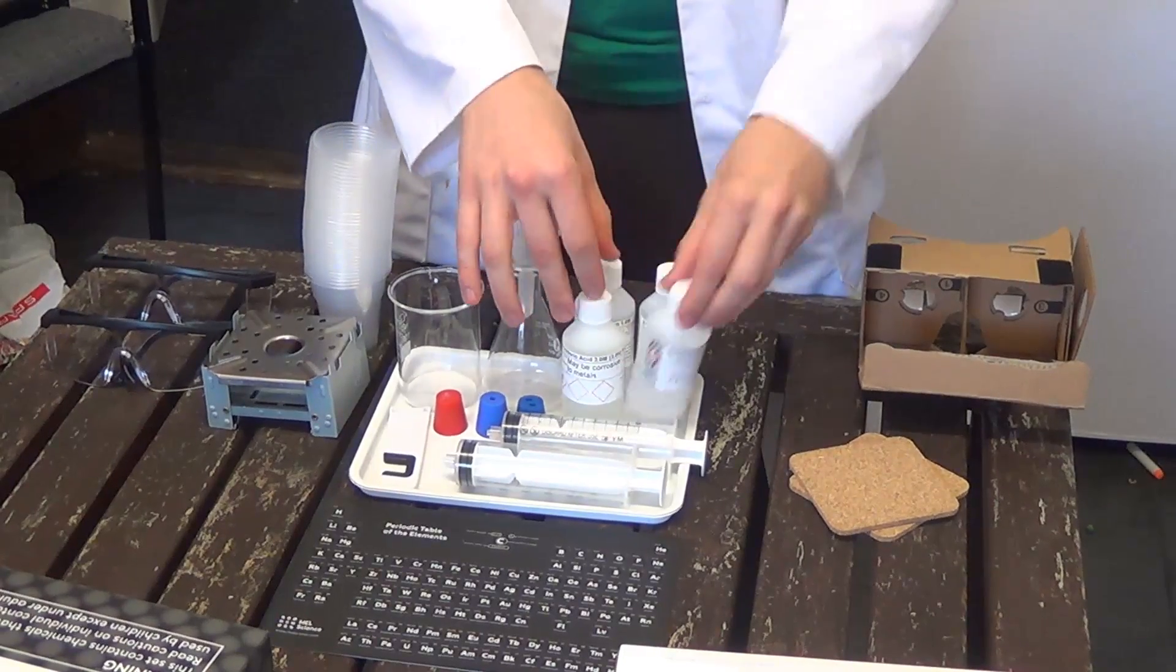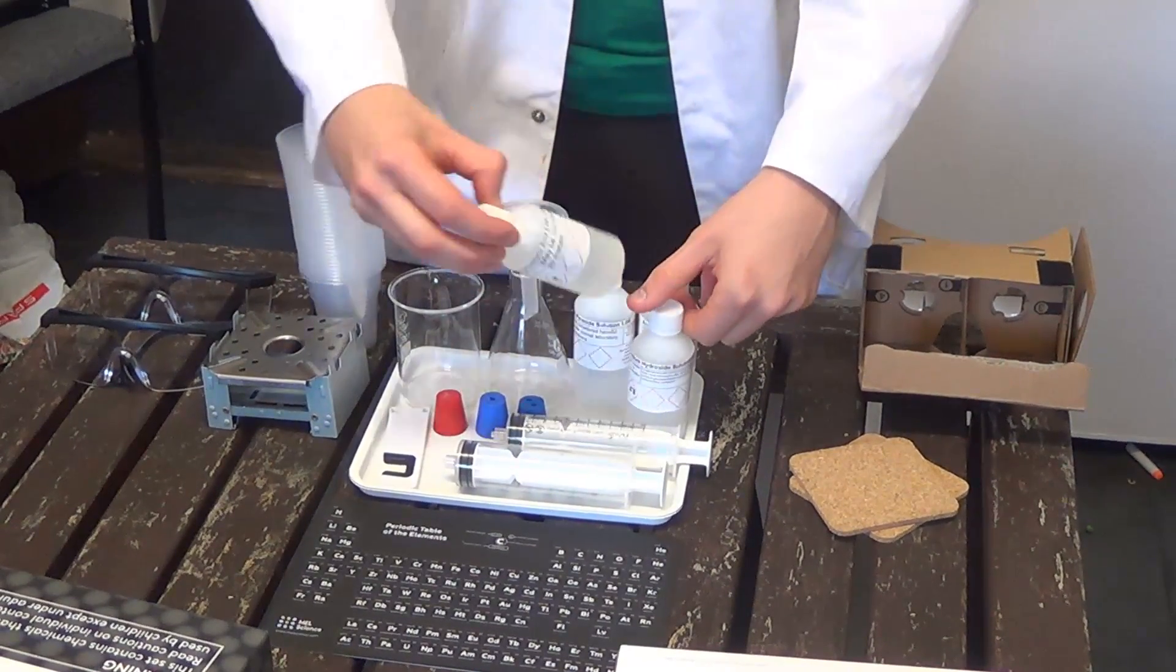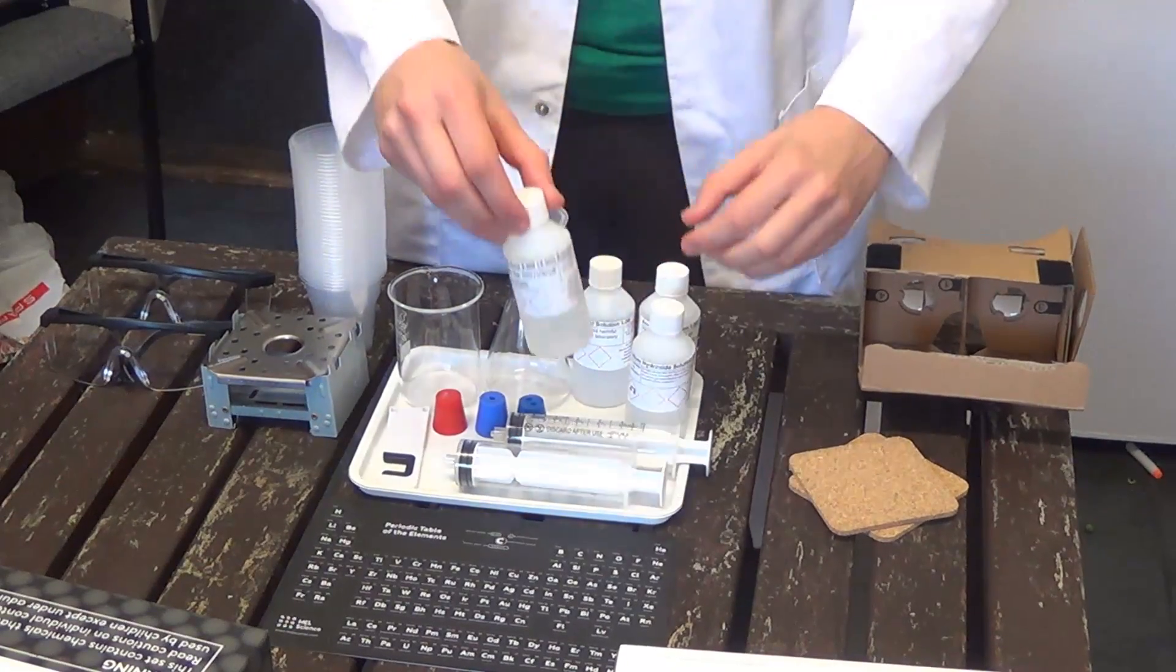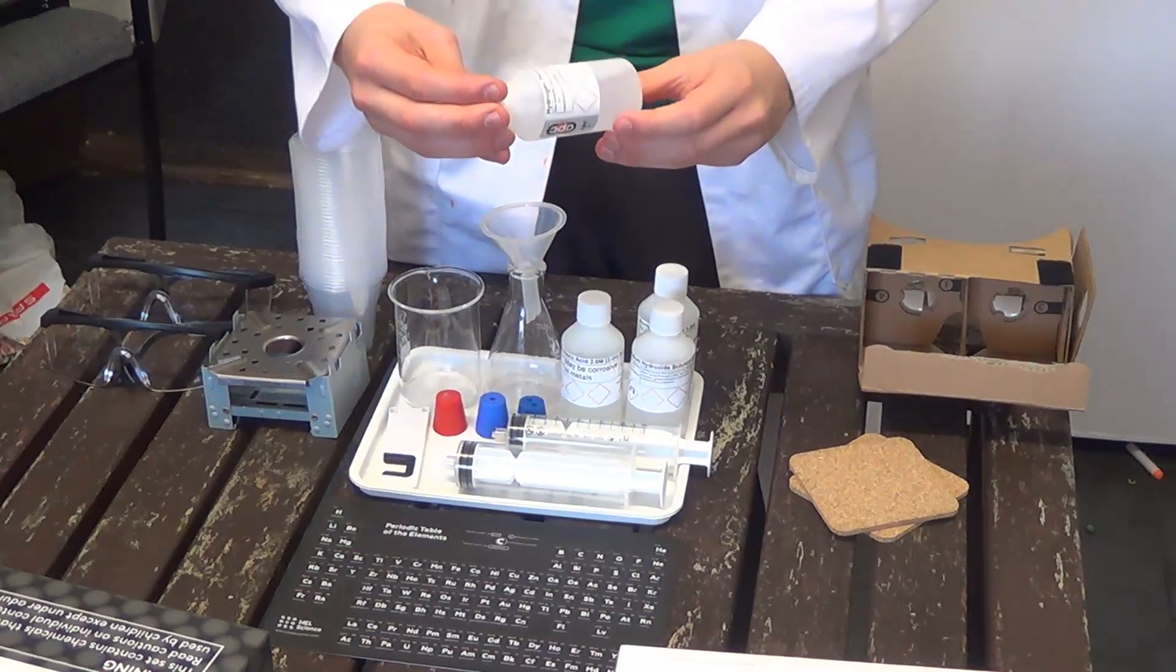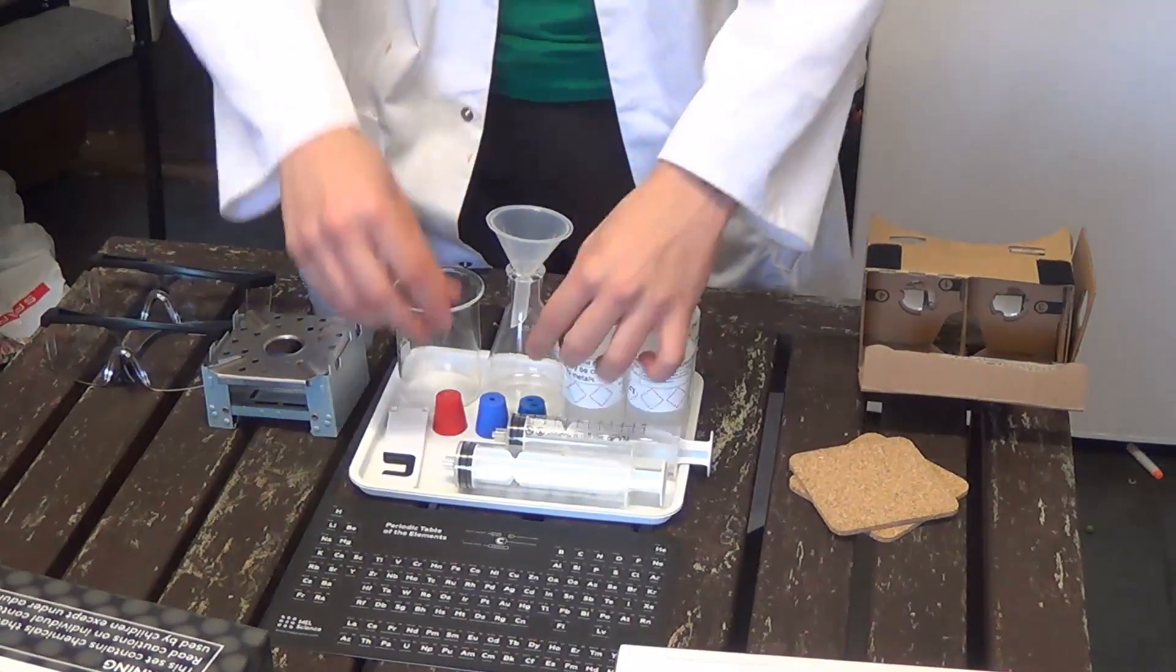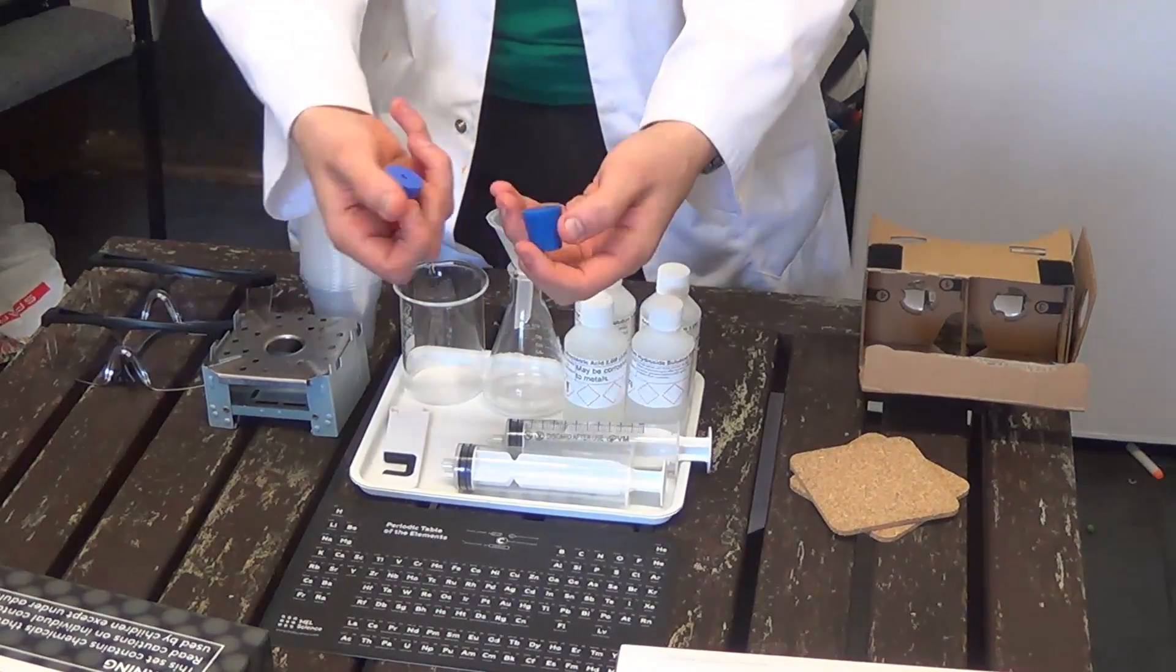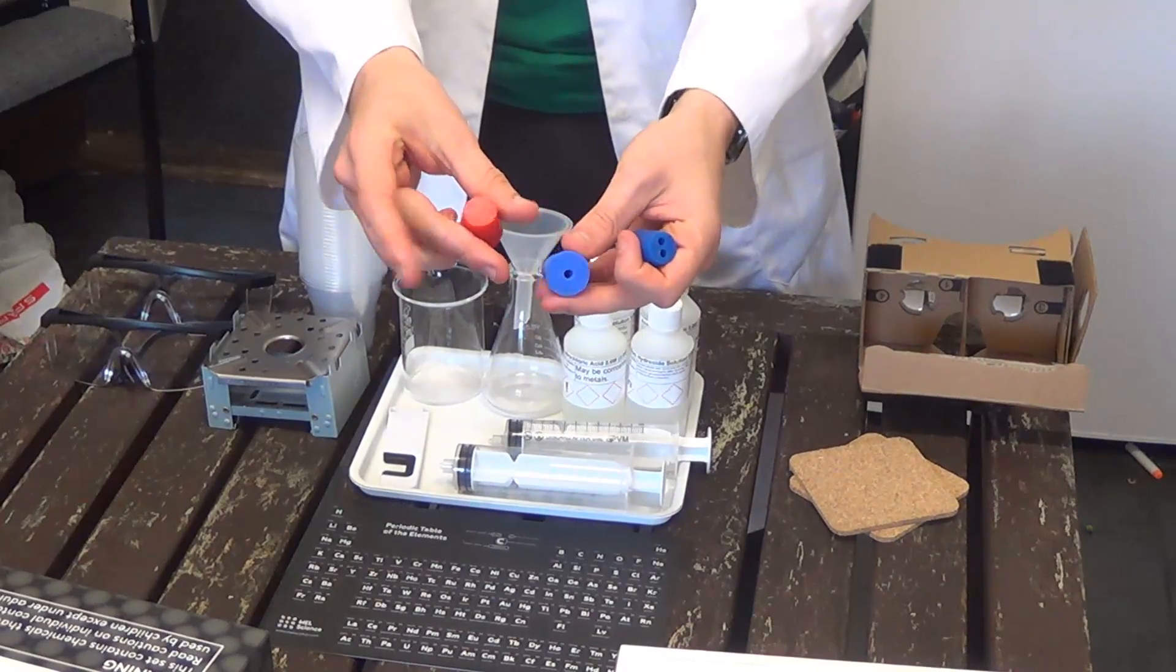Got a bunch of chemicals. This is sodium hydroxide, hydrochloric acid, ammonia, and hydrogen peroxide. We can do some fun things with that. We've got some bungs, different bungs. We've got one with two holes in, one with one hole, and one with no holes.